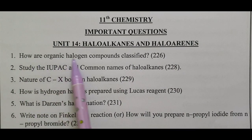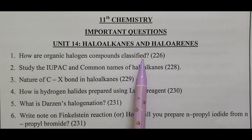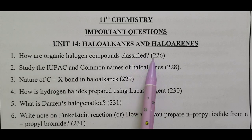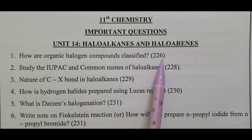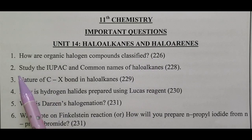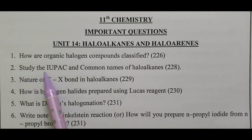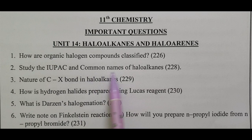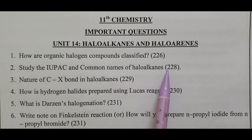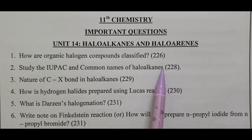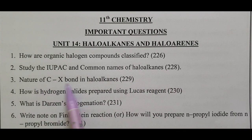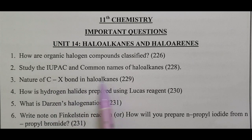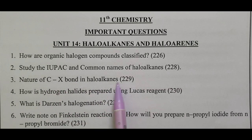Question number 1: How are organic halogen compounds classified? First classification is on page number 226. Study the IUPAC and common names of haloalkane - one table column - that is what we will learn. This covers the nature of C-X bond in haloalkane.